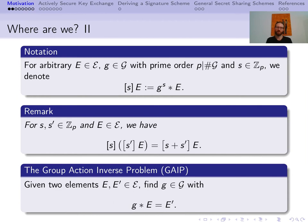In a hard-homogeneous space, we assume that the group action inverse problem is hard to break. This means that given two elements E and E prime, the probability of providing a G that connects them both is negligible in the implied security parameter.